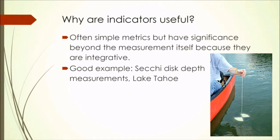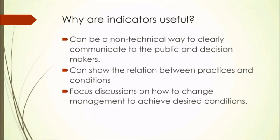Secchi disk depth is a good example because it's a simple, easy-to-understand measurement that reflects a great deal about the environment: sediment runoff, nutrient runoff, eutrophication, and oxygen depletion — all with ramifications for Lake Tahoe's ecosystem. It's not always easy to find such simple metrics with such significance. Environmental indicators are useful because they can be non-technical and communicate to the public in a common way, they show a relationship between practice and conditions, and they focus discussion on how changing management can achieve the desired condition.